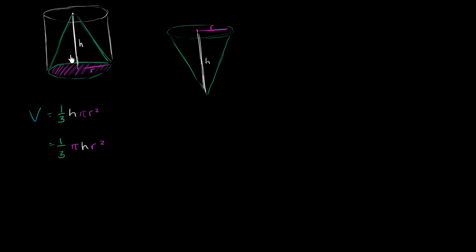But let's just apply these numbers just to make sure that it makes sense to us. So let's say that this is some type of a conical glass, the type that you might see at the water cooler. And let's say that we're told that it holds 131 cubic centimeters of water. And let's say that we're also told that its height, we're told that the height of this cone is five centimeters.